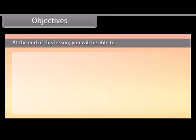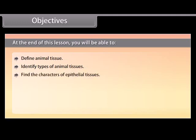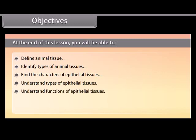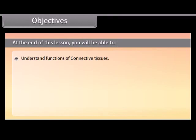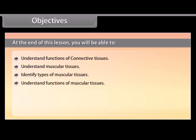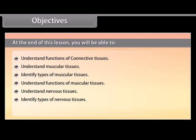At the end of this lesson, you will be able to: define animal tissue, identify types of animal tissues, find the character of epithelial tissues, understand types of epithelial tissues, understand functions of epithelial tissues, find the characters of connective tissues, understand types and functions of connective tissues, understand muscular tissues and their functions, understand nervous tissues, identify types of nervous tissues, and understand functions of nervous tissues.